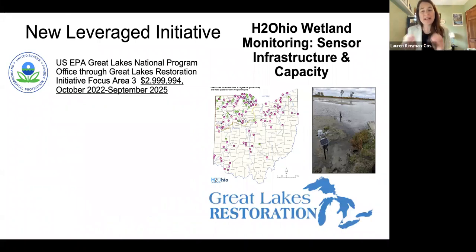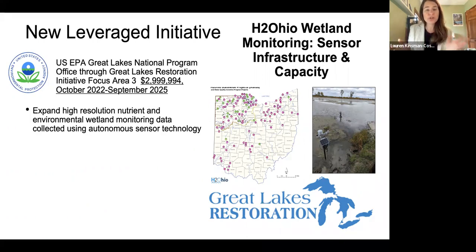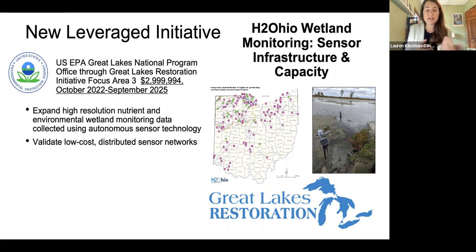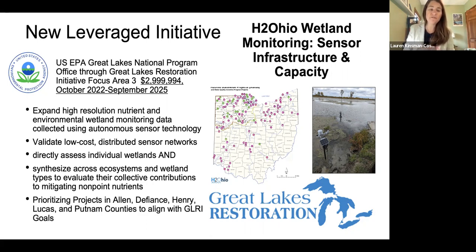A really exciting new direction expanding our capacity is new support from the Great Lakes Restoration Initiative Focus Area 3 to expand our sensor infrastructure. We've been awarded a $3 million grant to leverage our existing monitoring efforts, purchase more sensors, expand capacity to install them, and process and analyze the vast quantity of data that sensors will provide. This will let us validate low-cost distributed sensor networks and hopefully develop tools for best practices in wetland monitoring, not only directly assessing individual wetlands but allowing us to synthesize across different systems. The focus will be on projects in Allen, Defiance, Henry, Lucas, and Putnam counties to align with GLRI goals for the Maumee Basin and the Western Basin of Lake Erie.